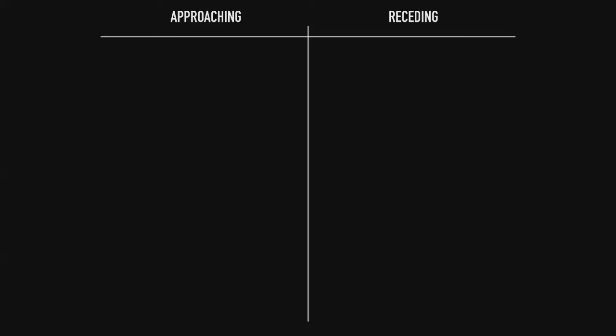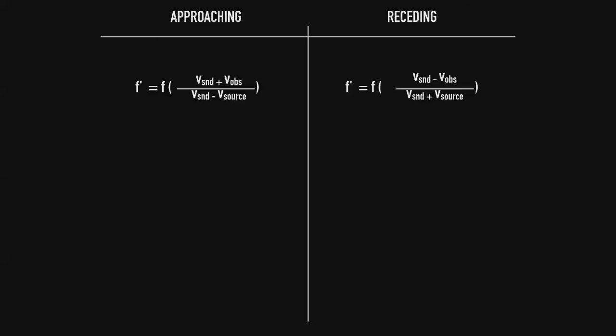We can compare when two things are approaching versus receding from each other. There are two formulas: the perceived frequency when approaching equals the original frequency times the velocity of sound in air plus the velocity of the observer, over the velocity of sound in air minus the velocity of the source. When receding, the perceived frequency equals the source frequency times the velocity of sound minus the velocity of the observer, over the velocity of sound plus the velocity of the source.